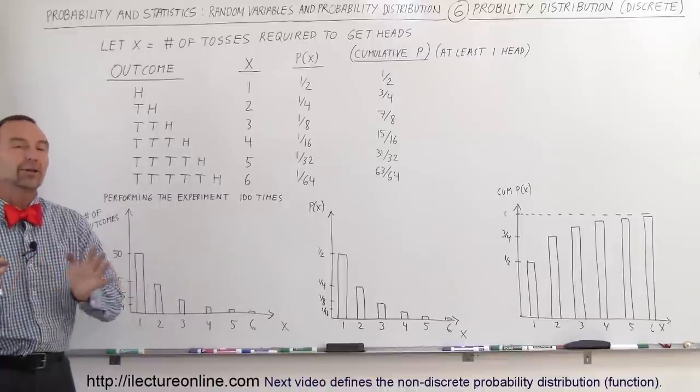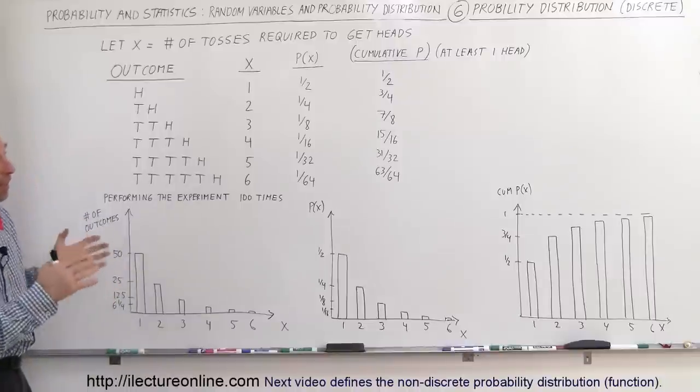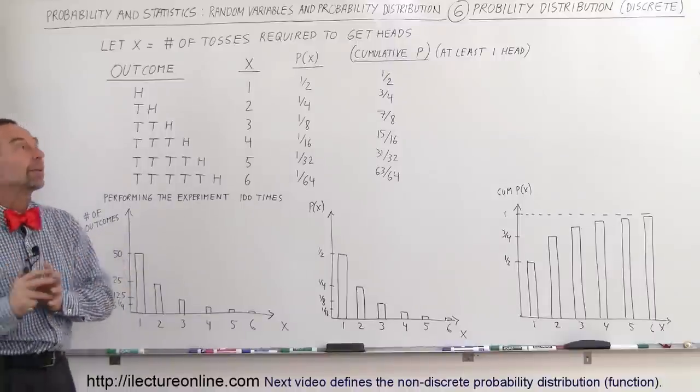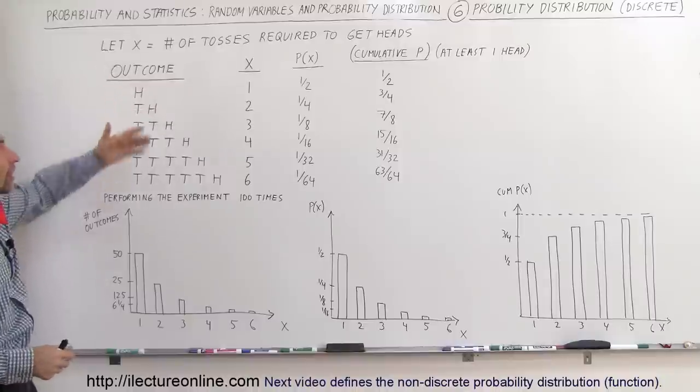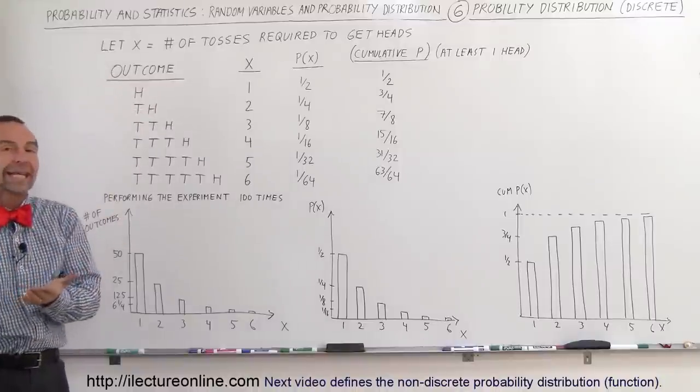Welcome to Lecture Online, and another good example of a probability distribution, a discrete probability distribution, is the example we had before, where x will represent the number of tosses required to get heads.